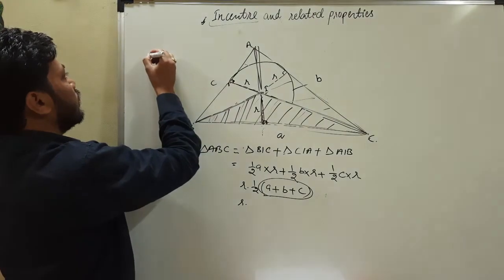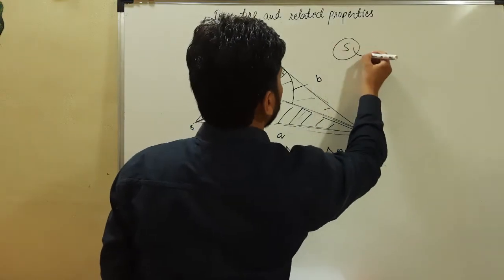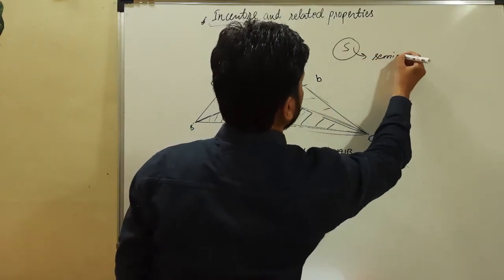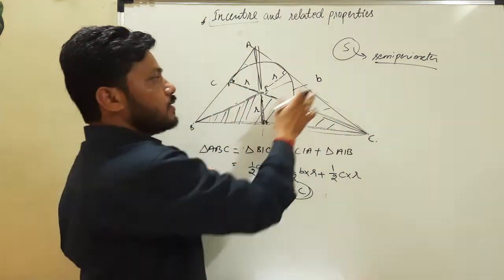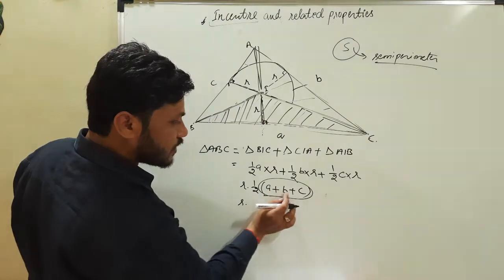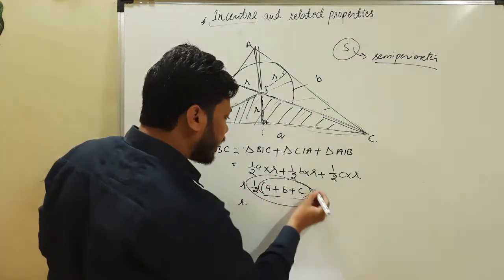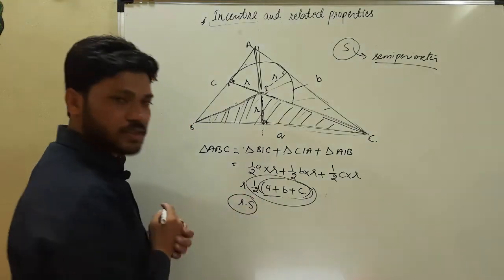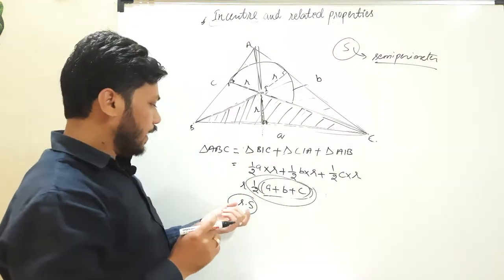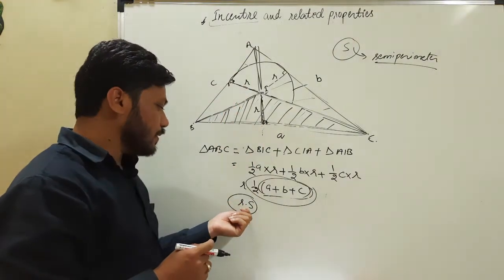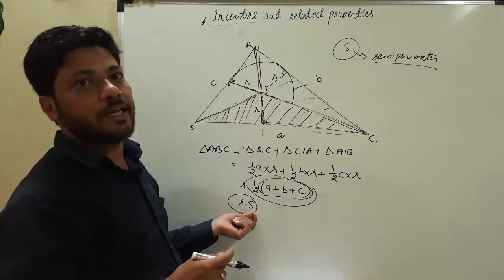There is a concept in the area of triangle where S is the semi-perimeter. Semi-perimeter is the sum of all three sides divided by 2, so (a plus b plus c) divided by 2 equals S. That means the area of any triangle can be calculated by simply multiplying r, the inradius, by S, the semi-perimeter: Area equals r times S.